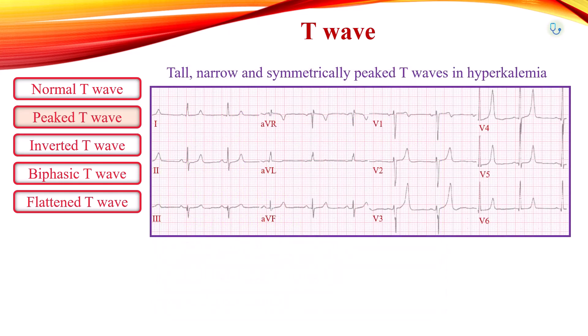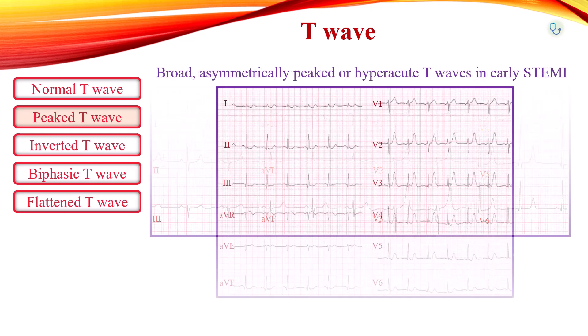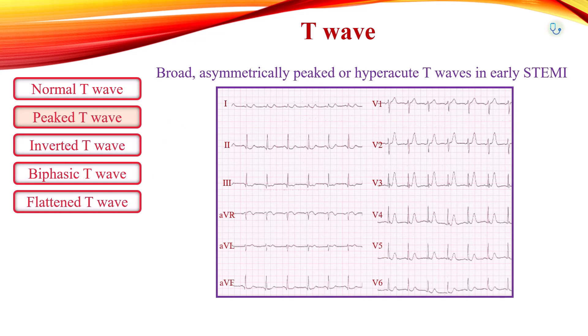Tall, narrow, and symmetrically peaked T-waves are characteristically seen in hyperkalemia. Broad, asymmetrically peaked or hyperacute T-waves are seen in the early stages of ST-elevation myocardial infarction. Hyperacute T-waves often precede the appearance of ST-elevation and Q-waves, and may appear normal in size if the preceding QRS complex is of small amplitude.